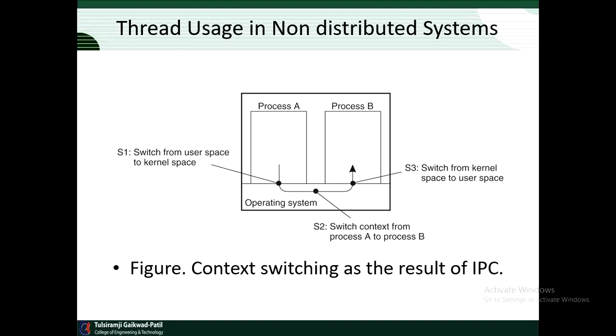Like a process, a thread executes its own piece of code independently from other threads. However, in contrast to processes, no attempt is made to achieve a high degree of concurrency transparency if this would result in performance degradation. Therefore, a thread system generally maintains only minimum information to allow a CPU to be shared by several threads. In particular, a thread context often consists of nothing more than CPU context along with some other information for thread management.